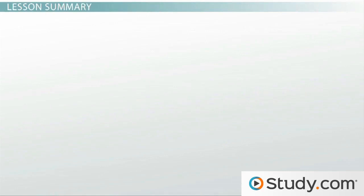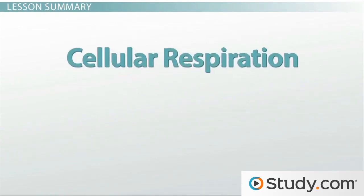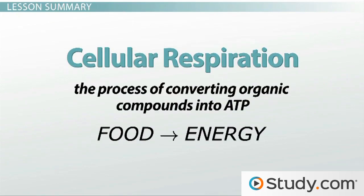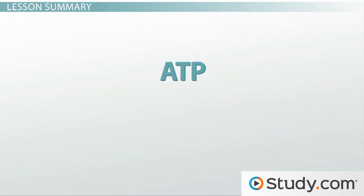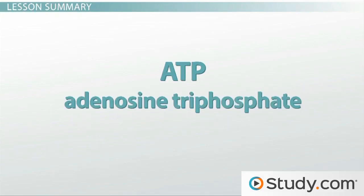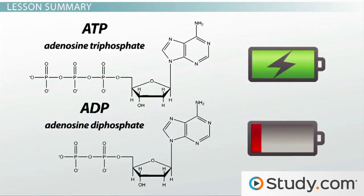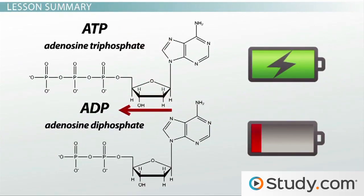So let's recap. All living things perform cellular respiration — the process of converting organic compounds, also known as food, into ATP, or energy. ATP, also known as adenosine triphosphate, is the molecule all living things use to store energy. ATP is like a rechargeable battery. When the battery loses its charge in the form of a phosphate, it becomes ADP, or adenosine diphosphate. Since ATP is rechargeable, cellular respiration can turn that uncharged ADP back into a charged ATP.